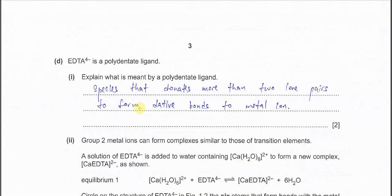EDTA⁴⁻ is a polydentate ligand. Explain what is meant by a polydentate ligand. This is very easy and straightforward: it is a species that donates more than two lone pairs to form dative bonds to the metal ion.